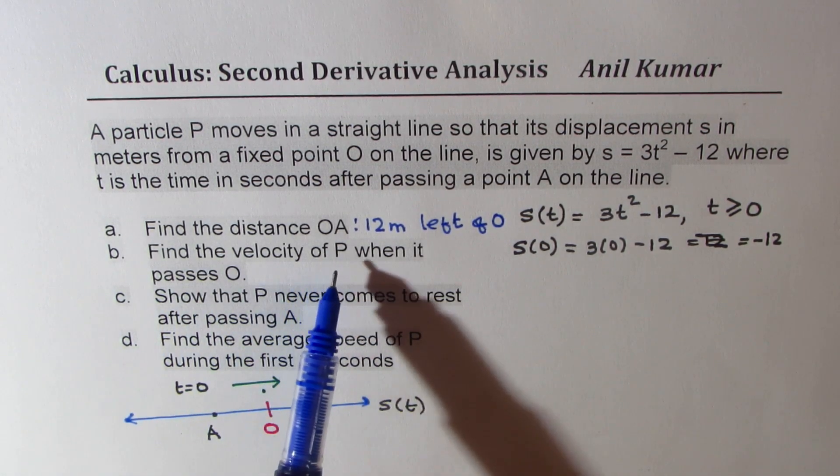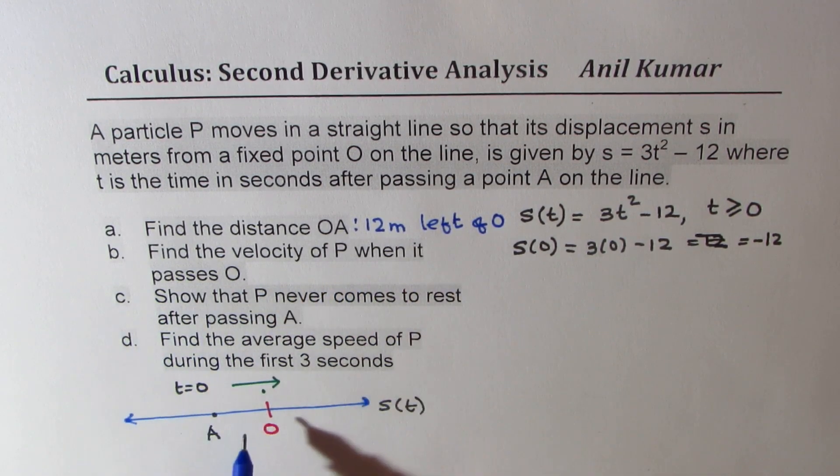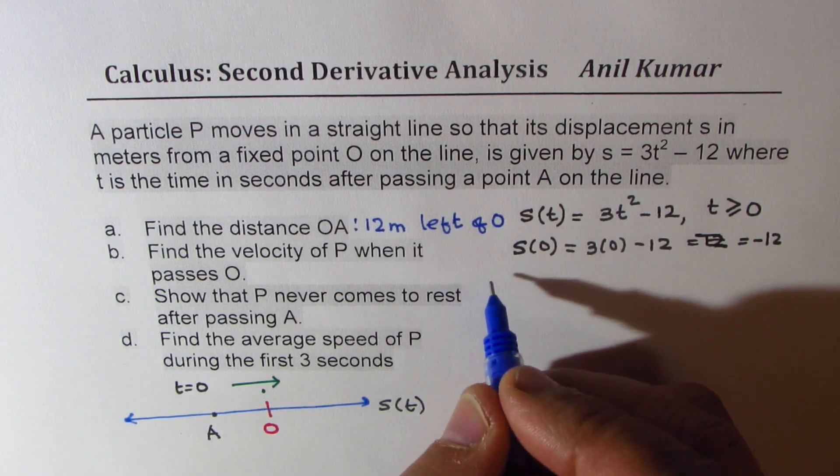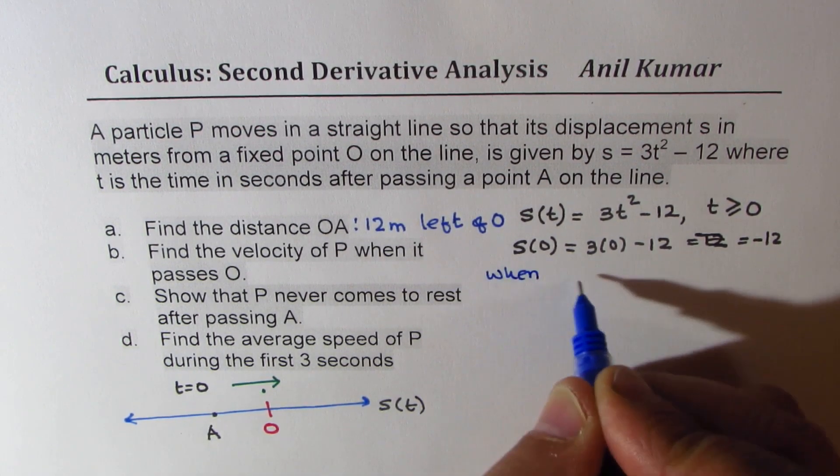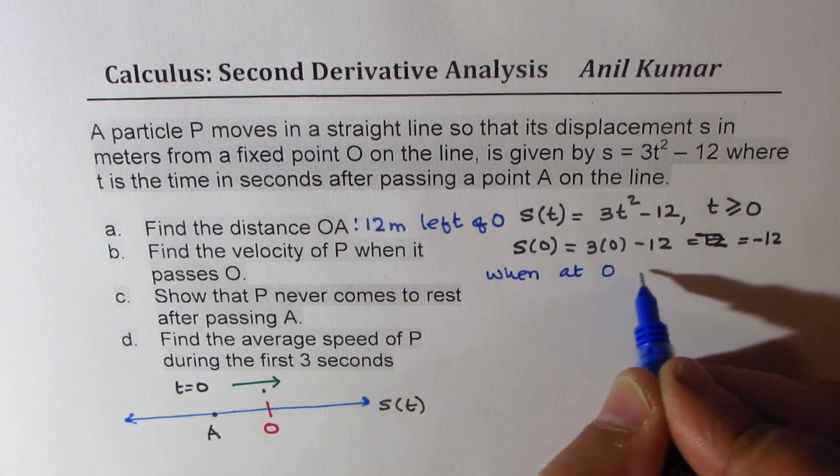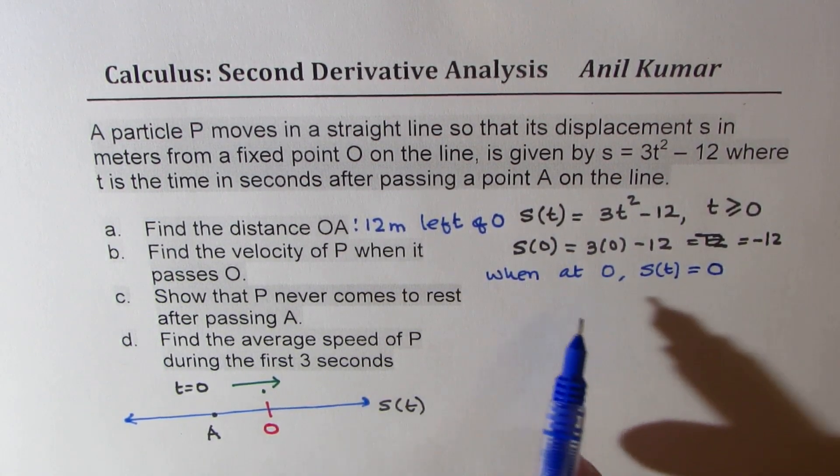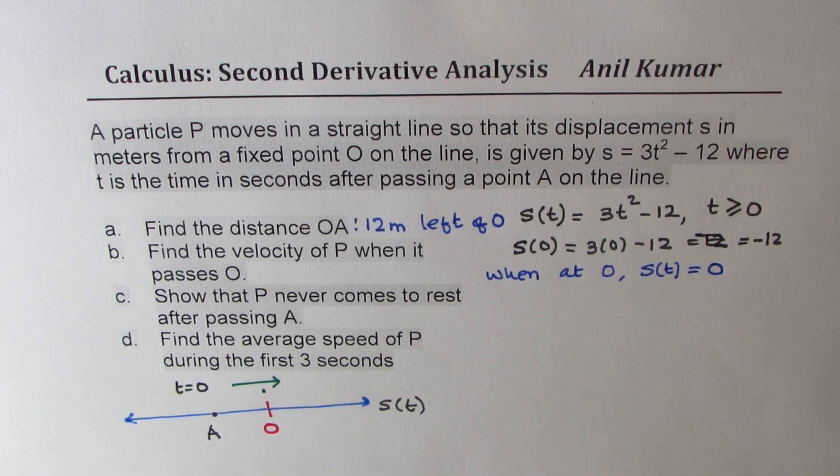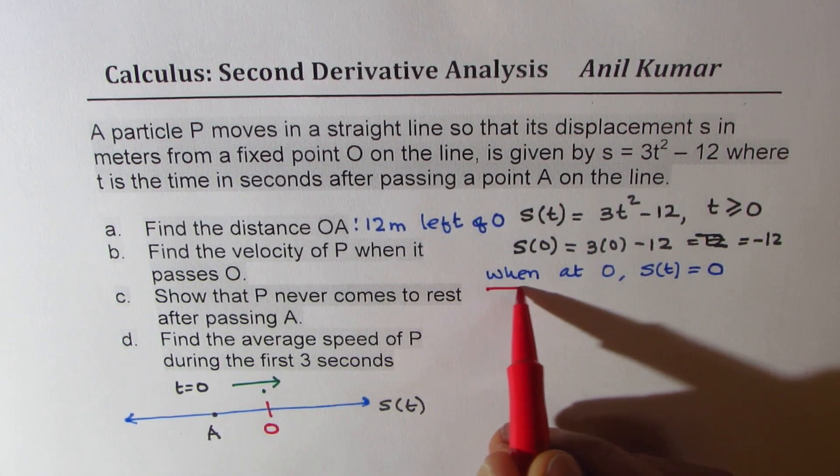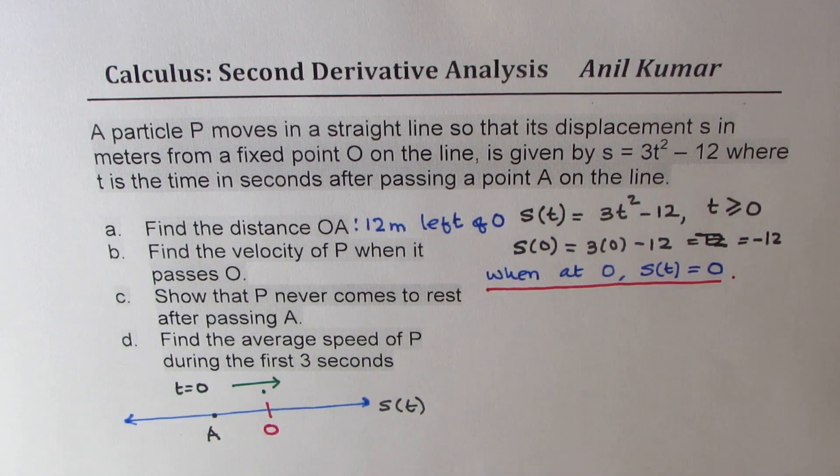Now let's move on to part B. Find the velocity of particle P when it passes O. Now when it passes O, at that time, S distance should be 0 because distance is from O. You get the idea. Distance is from O. So let me write down here when at O, at that time, S(T) equals 0. So this is very important to understand. And that gives you the time when we are really interested in finding the velocity.